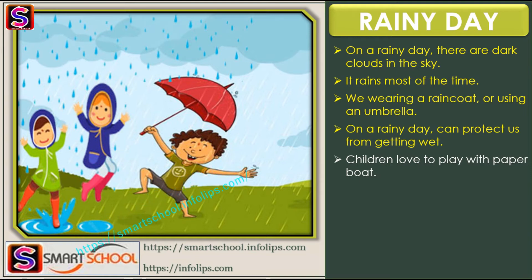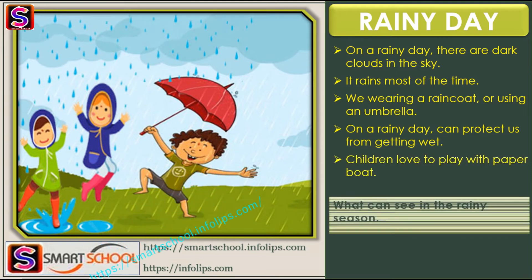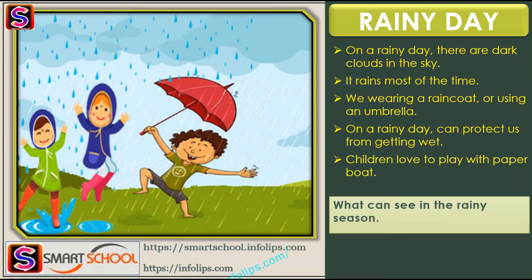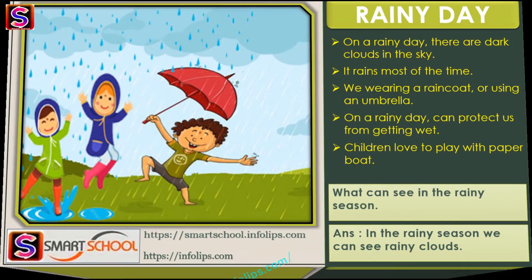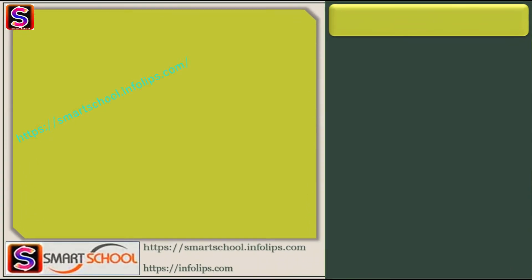Question: what can you see in the sky in the rainy season? You can see dark rain clouds! Let's see another weather — a windy day.